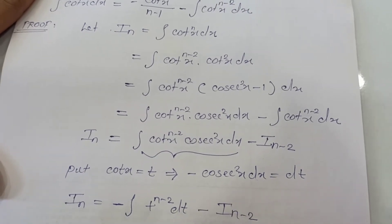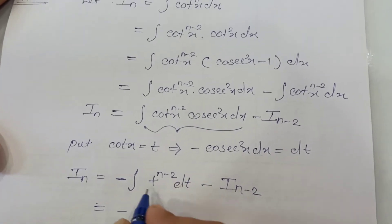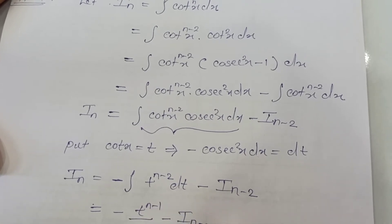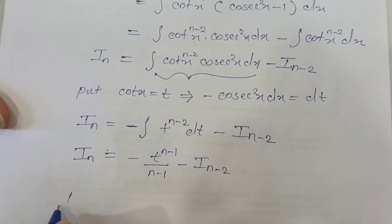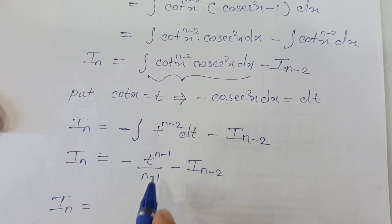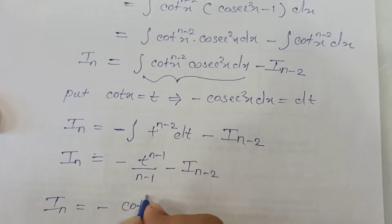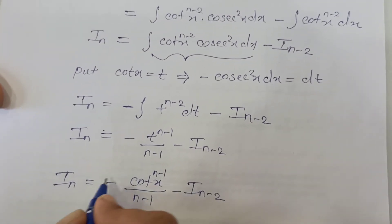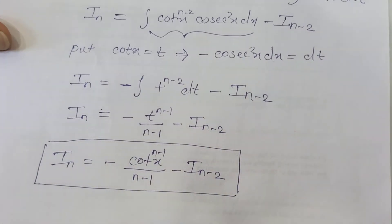Pulling the minus sign outside, it becomes minus integration of t raised to n minus 2, which equals minus t raised to n minus 1 upon n minus 1, minus I_{n minus 2}. Substituting back t equals cot x gives minus cot raised to n minus 1 upon n minus 1, minus I_{n minus 2}. This completes the proof of reduction formula 4.